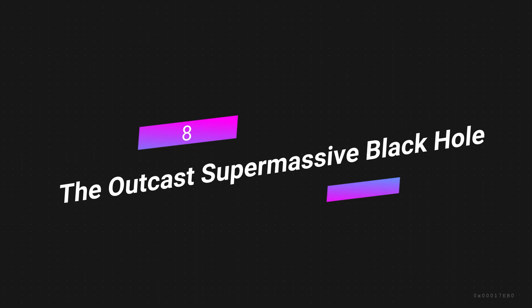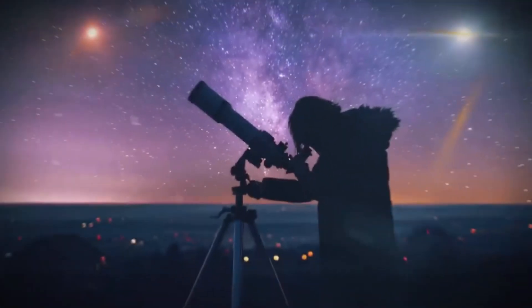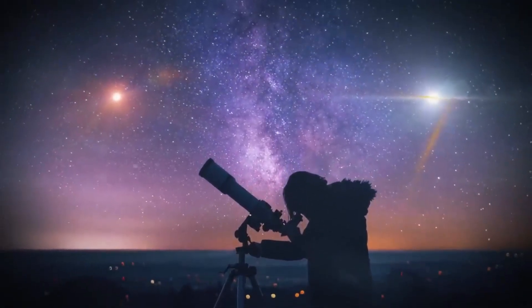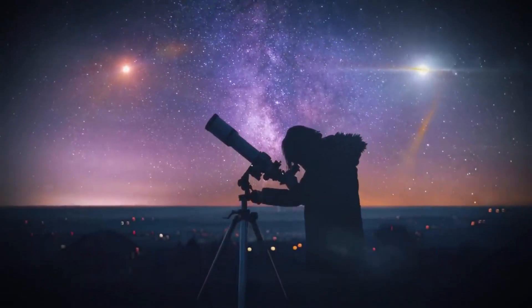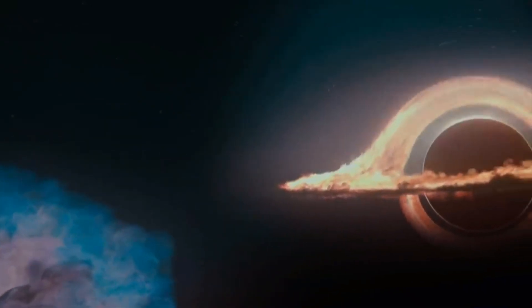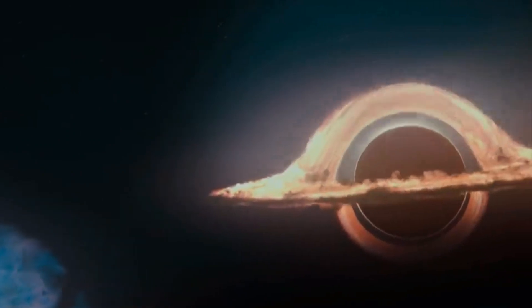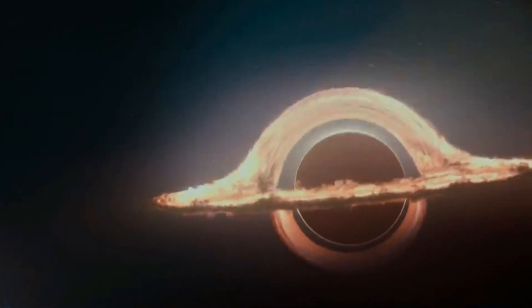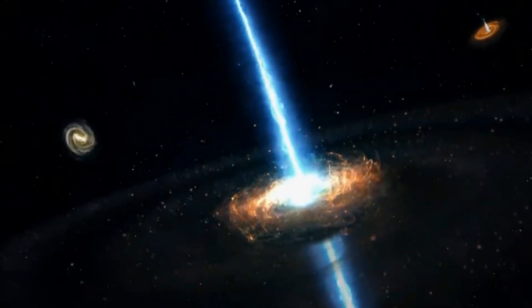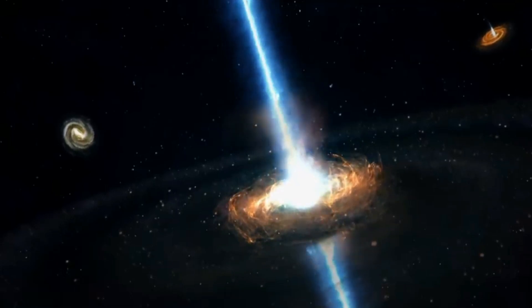Number 8: The outcast supermassive black hole. If we knew everything that was going on in the universe, our lives might not seem so important. On the other hand, some of these things are so big that they really show how small we are. One of them is an enormous black hole that was kicked out of the galaxy.